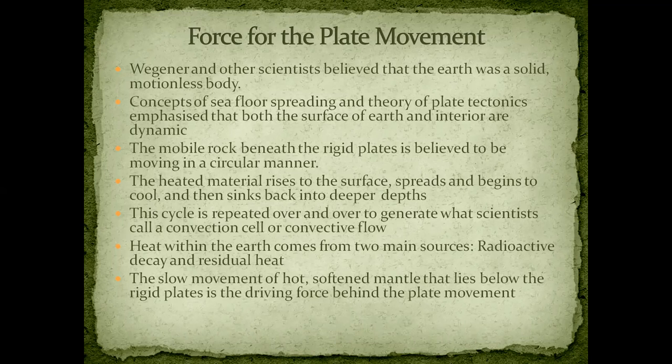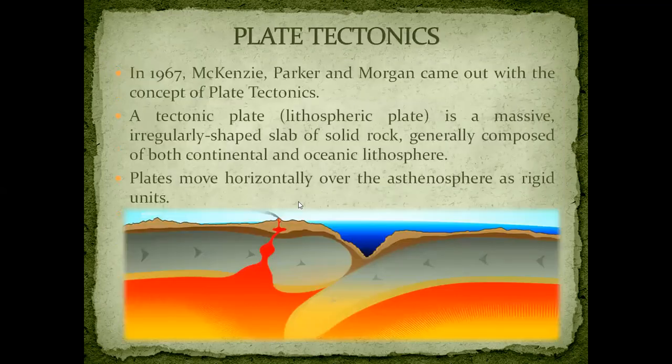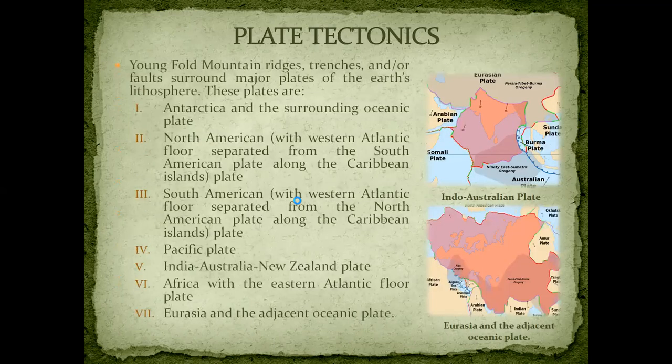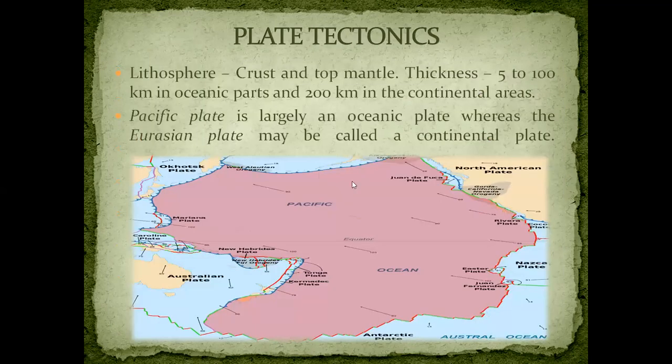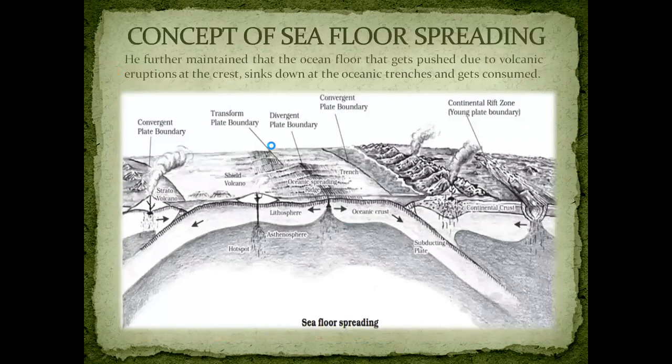Whenever something is very heated up or very hot, it generally rises up and spreads out. When it comes up, it cools down. Due to the heat and pressure from below, the hot liquid-state material rises to the surface, spreads, and cools. Once cool, it sinks back down, and then the process repeats. We have studied about this convectional current theory — let me get back to that slide so you can relate what I am talking about.